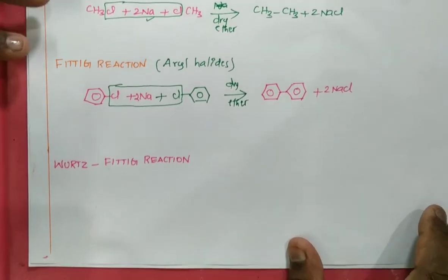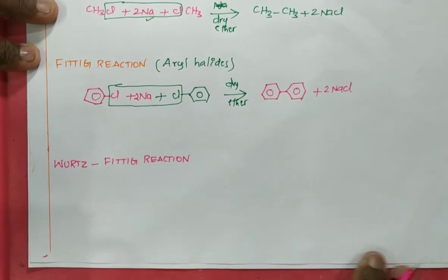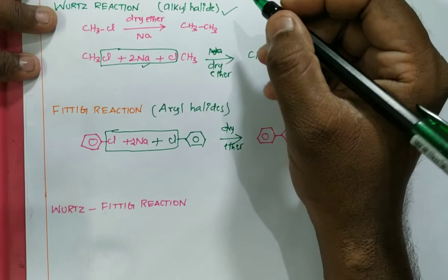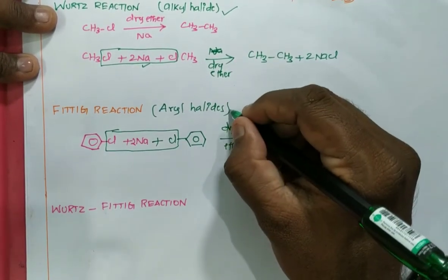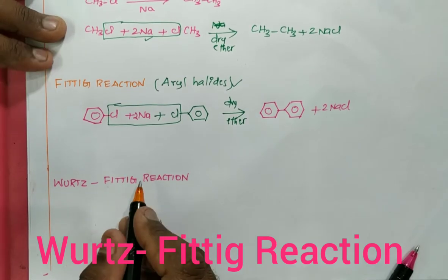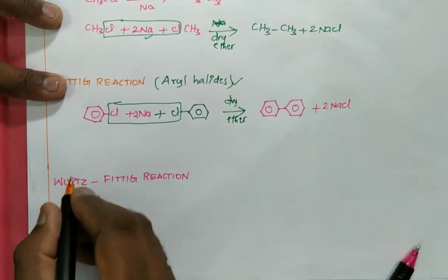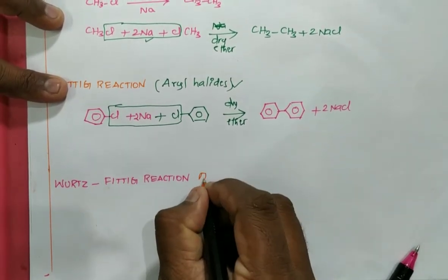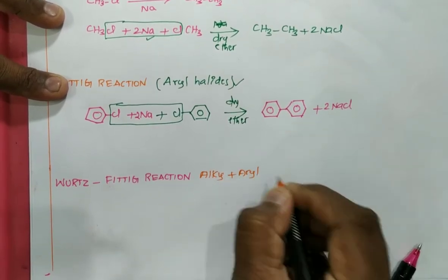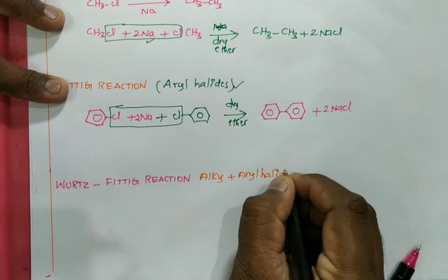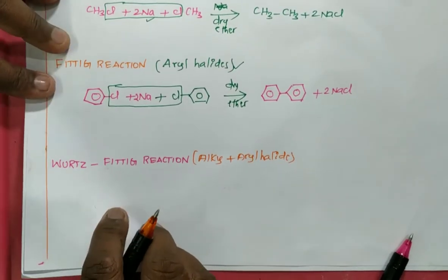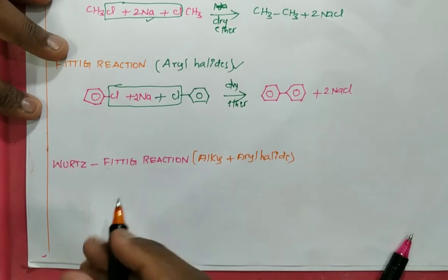The third category is the Wurtz-Fittig reaction. The Wurtz-Fittig reaction uses a mixture of alkyl and aryl halides, which are combined to form an alkylated product of arenes.